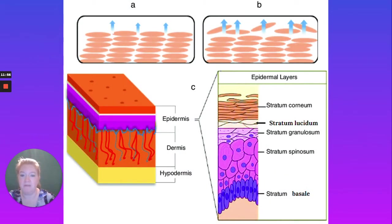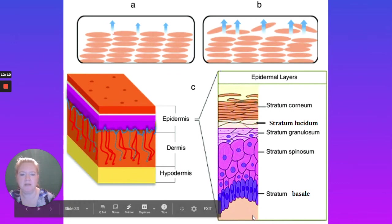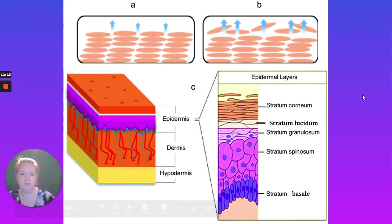Here we have the layers: the epidermis with five layers, the dermis with two layers, and the hypodermis with just one. The top of the epidermis — the stratum corneum — has cells that are flaking off, those oldest cells. Remember, cells start at the bottom and move upward, youngest to oldest.